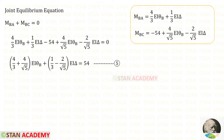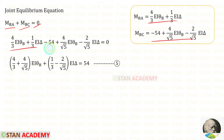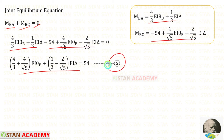Now let us write the joint equilibrium equation. At joint B, when we add M_BA and M_BC, the result equals 0. Applying the expressions from the slope deflection equations and adding them, we get the equilibrium equation, which we label as equation 5.